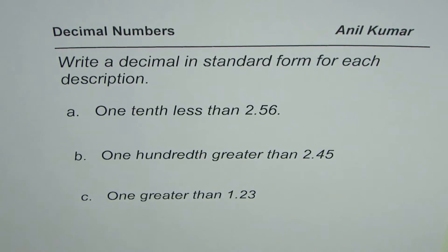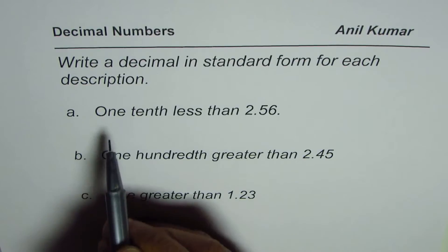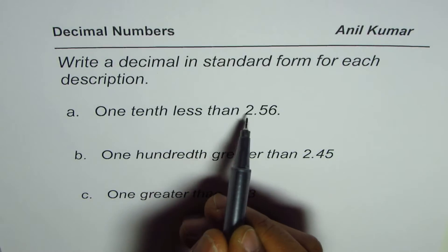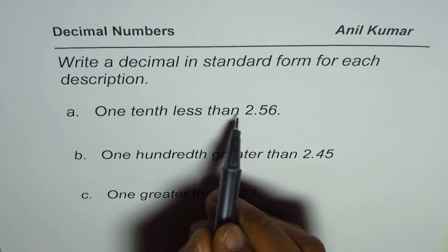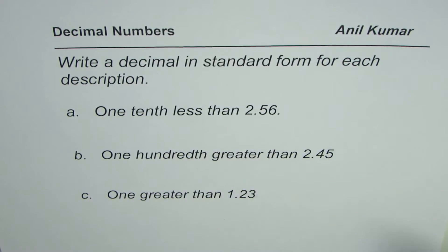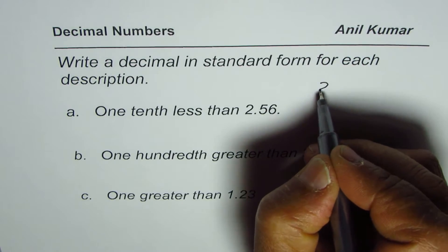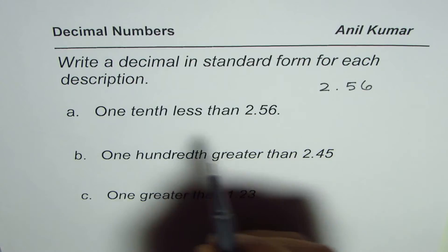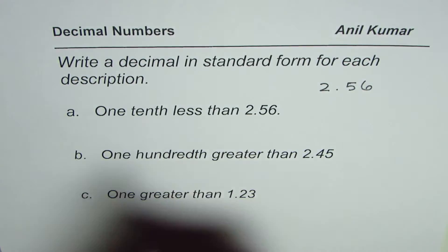Now in this question we are trying to write numbers with the given description. The first description here is one tenth less than 2.56. So 2.56 is the number. We have to write a number which is less than this by one tenth.